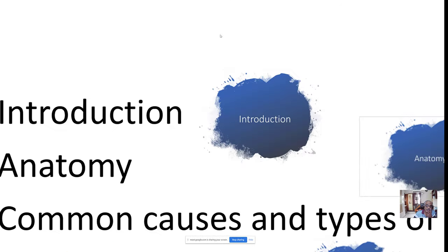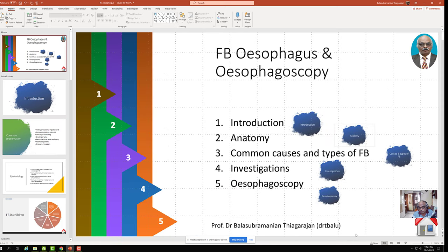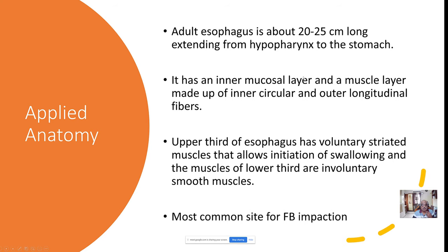Now let us go to the basic anatomy. The length of the esophagus in an adult is around 20 to 25 centimeters — roughly 10 inches. It extends from the hypopharynx up to the level of the stomach. The narrowest portion of the entire gastrointestinal tract happens to be the cricopharynx area.